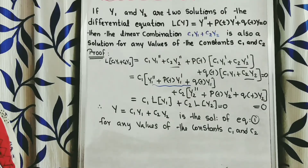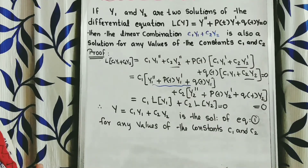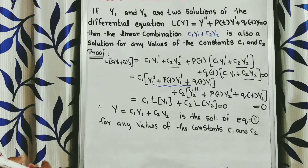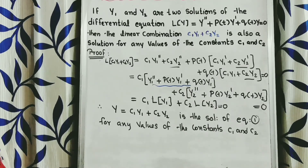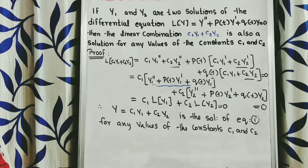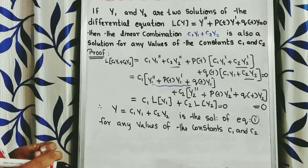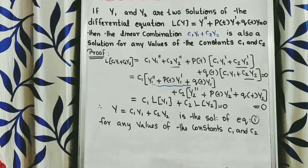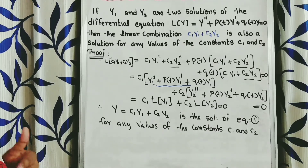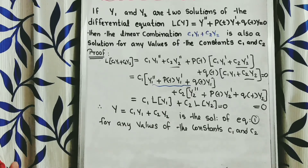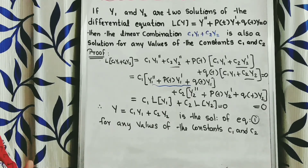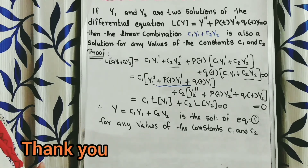We conclude that if y₁ and y₂ are solutions of the differential equation L(y) = y'' + p(t)y' + q(t)y = 0, then the linear combination c₁y₁ + c₂y₂ is also a solution for any values of the constants c₁ and c₂.